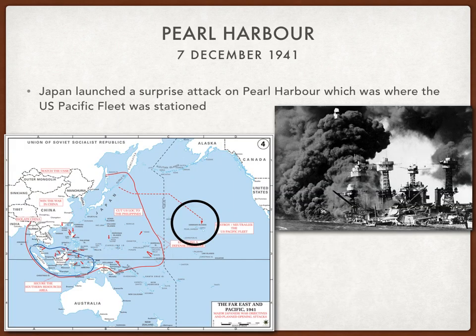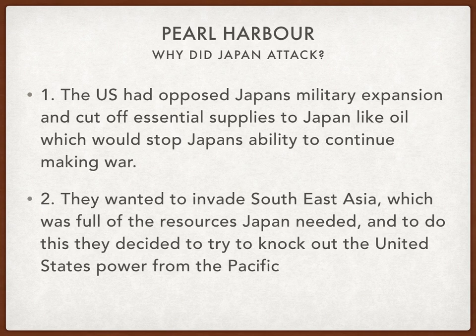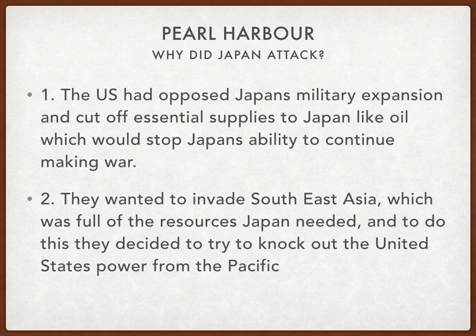Japan then made a big play — they decided they were going to attack the US Pacific Fleet which was stationed at Pearl Harbour, shown circled in the middle of the Pacific Ocean. So why did Japan attack America? There were two main reasons. First, the US was not happy about Japan's military expansion in the Pacific and cut off essential supplies to Japan, such as oil, which would stop Japan's ability to continue making war. Second, Japan wanted to invade Southeast Asia, which was full of the resources they needed, and to do this they decided to try to knock out the United States as a power from the Pacific Ocean.